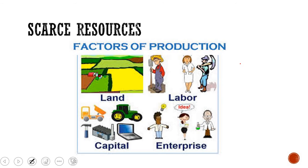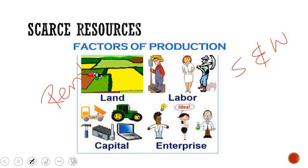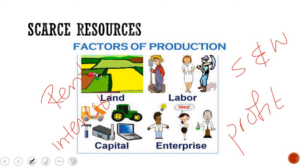We move on to society's economizing problem, which has to do with scarce resources. Your scarce resources are your factors of production: land, labor, capital, and entrepreneurship. Each has a remuneration — land earns rent, labor earns salaries and wages, entrepreneurship earns profit, and capital earns interest. Land includes all natural resources; labor is both physical and mental; capital refers to manufacturing aids used to produce goods and services, and purchasing capital is an investment. Entrepreneurship combines land, labor, and capital to produce goods and services in order to make a profit.